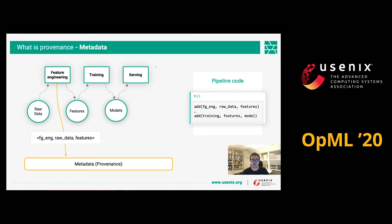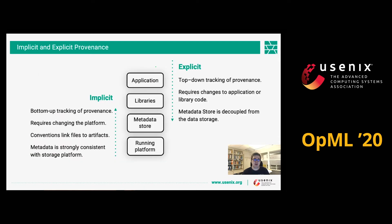However, we strive to keep this machine learning code as clean and clear as possible. So we would expect the platform itself to do the tracking and provide us with the provenance information without us having to modify our code. This provides us with two mechanisms that can track provenance: an explicit one and an implicit one. The explicit version involves adding hooks in your code — calls to external libraries that track provenance.